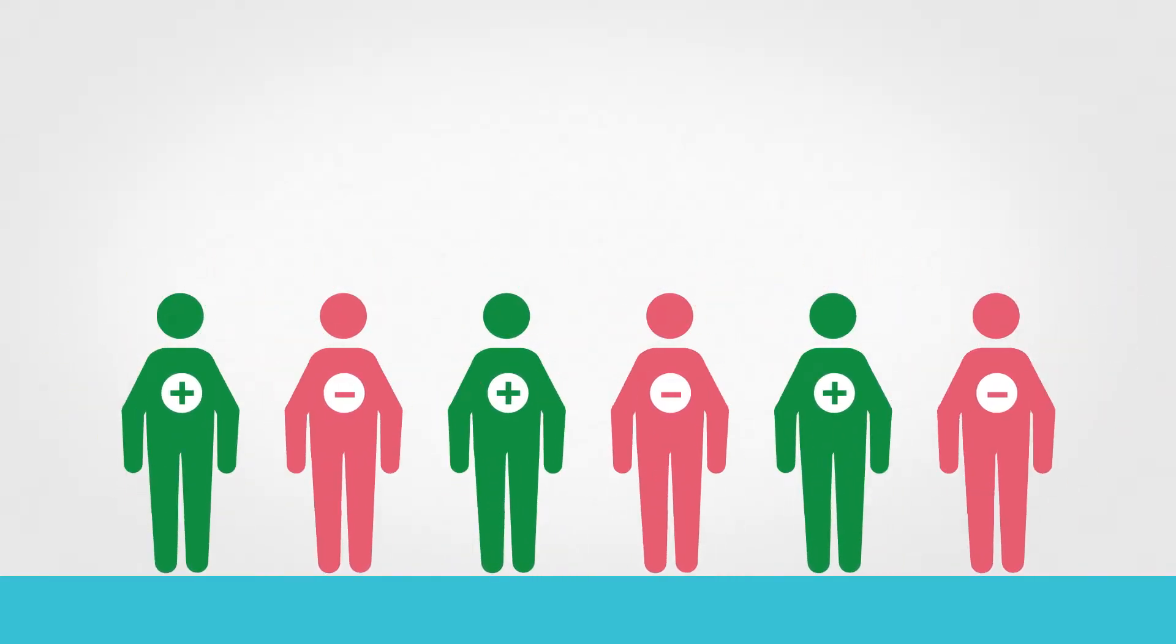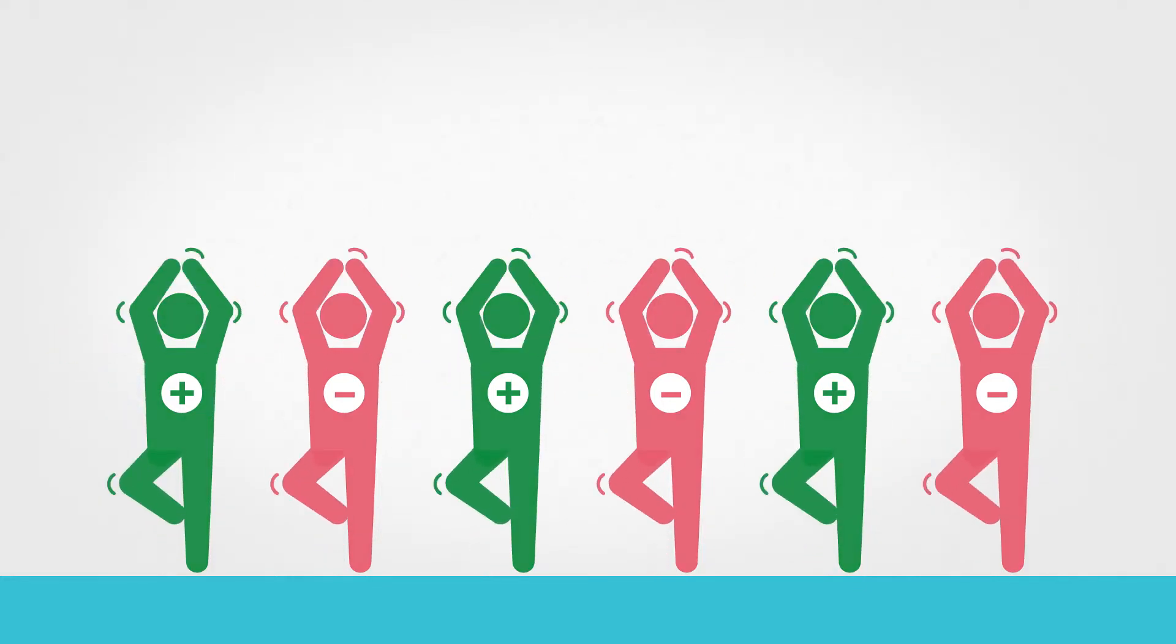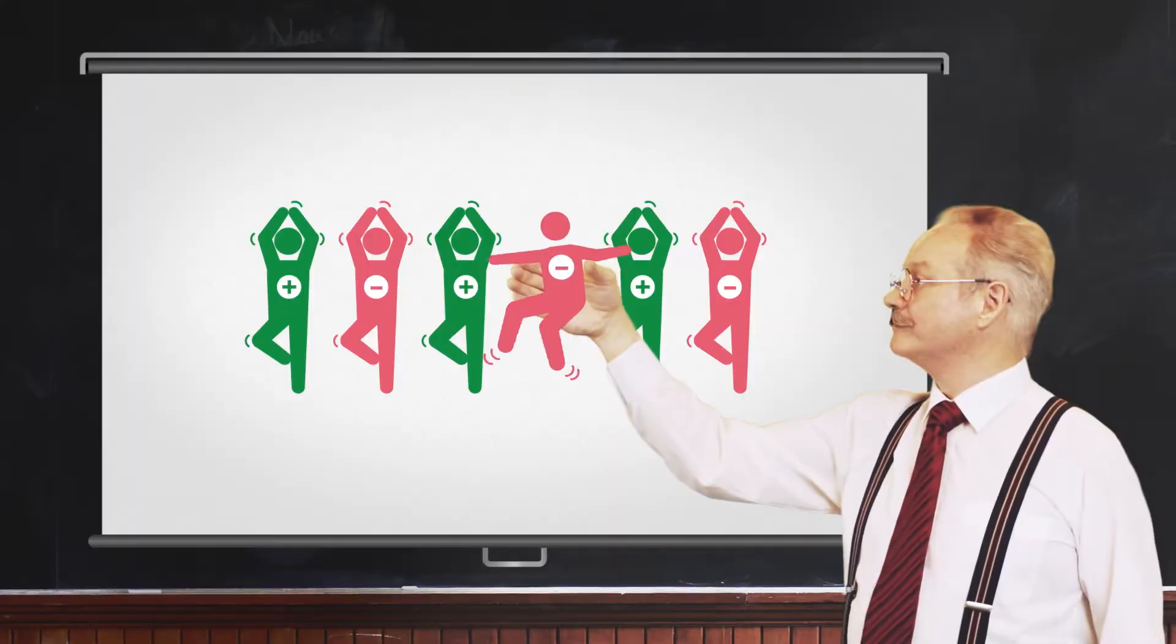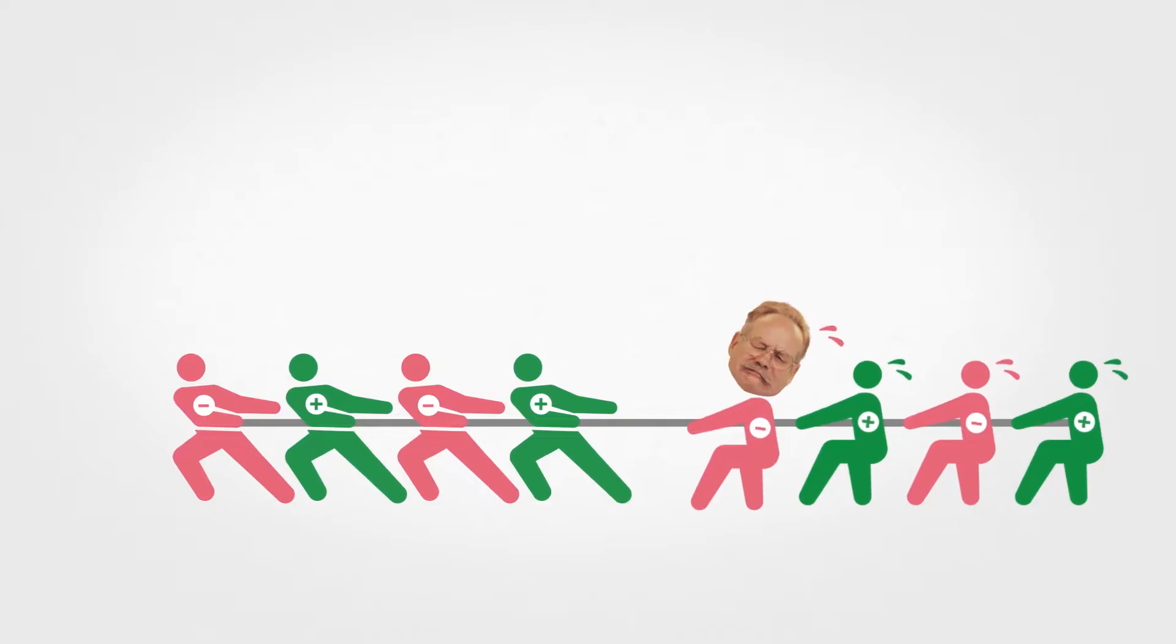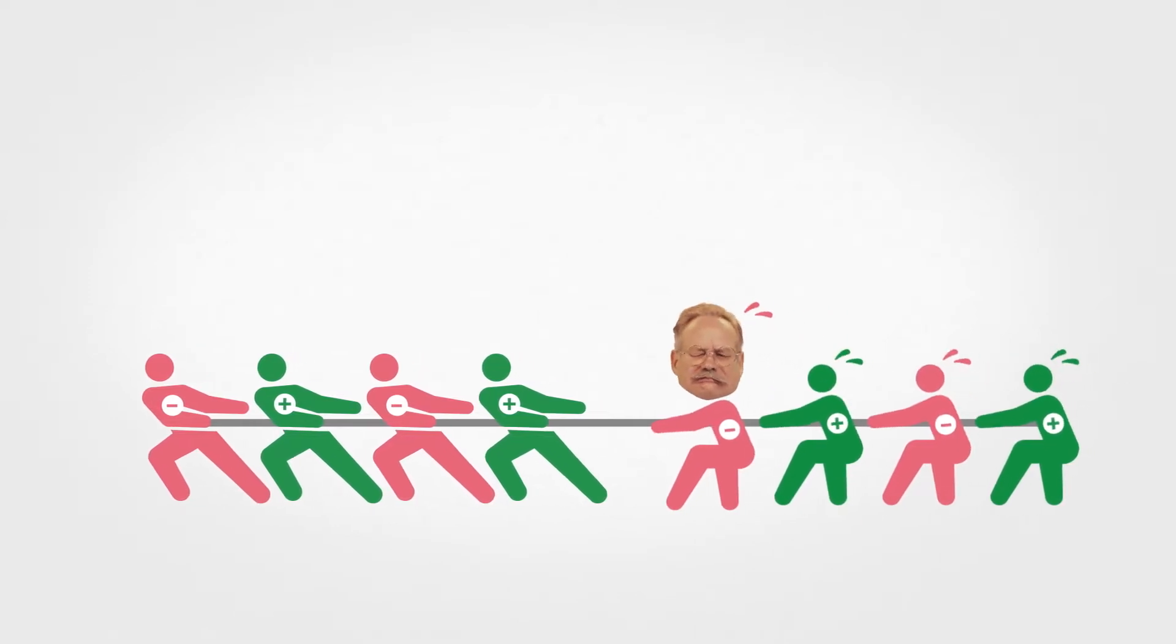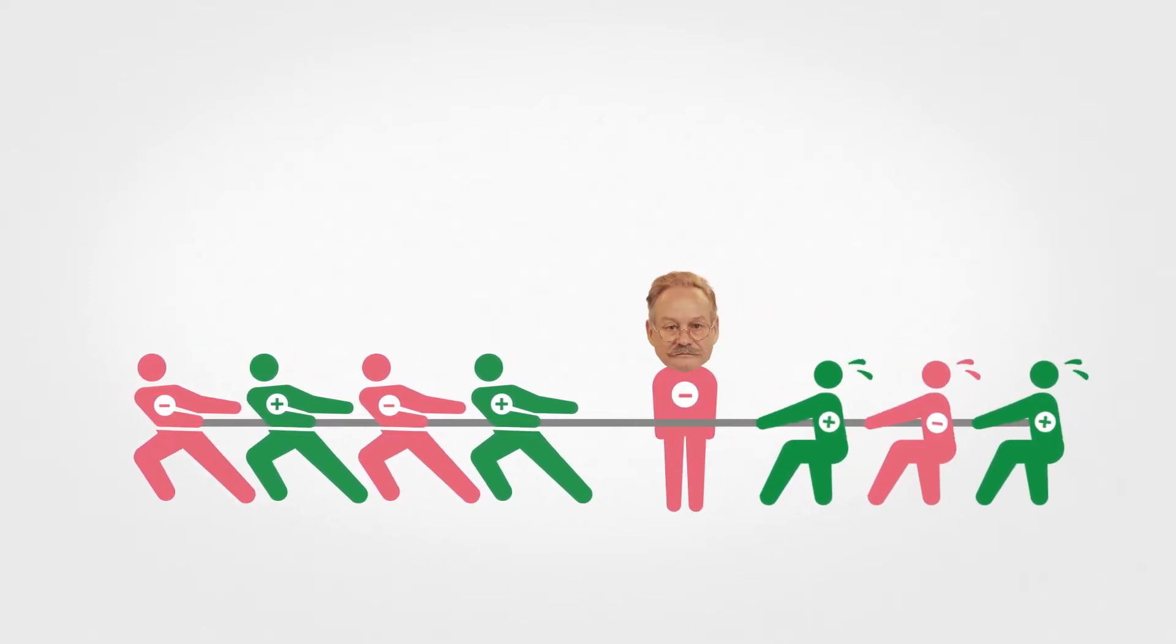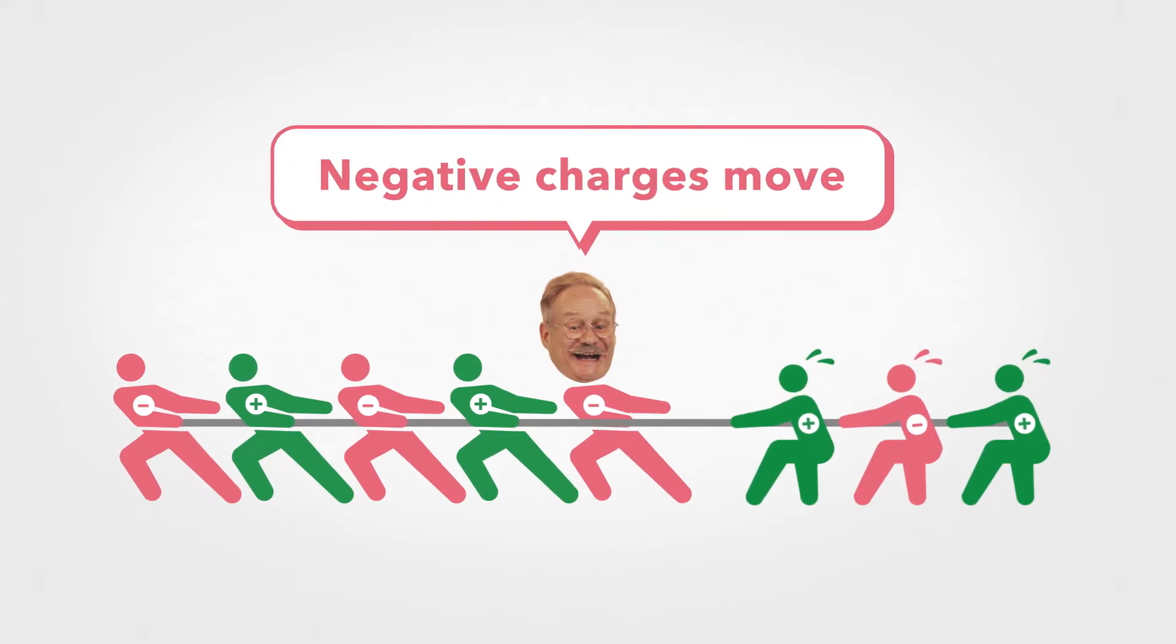This object has the same number of positive and negative charges, so it's electrically neutral. But it's easy to upset that balance. If two objects come into contact, negative charges move to the stronger side.